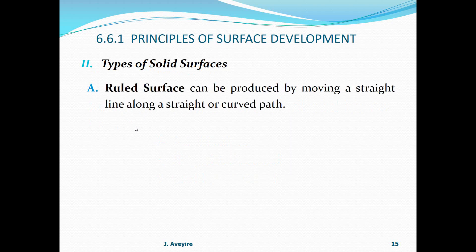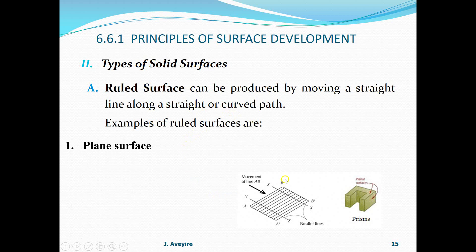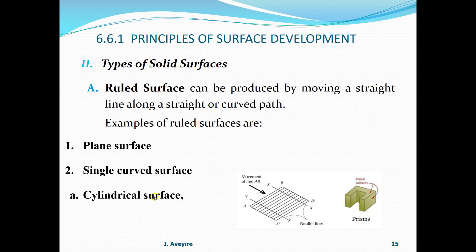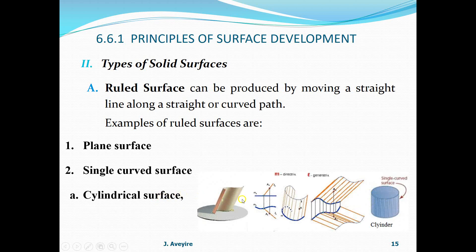A ruled surface can be produced by moving a line along a straight or curved path. The plane surface is the situation where you have a line AB and you move it along two parallel lines XY - this is the result as the line moves along it. Typical examples are the surfaces of a prism. A second example is single curved surfaces - a typical example is the cylindrical surface, whereby the shape is curved along one particular end.